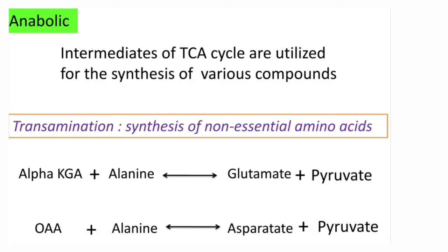Coming to the anabolic role of TCA cycle, the intermediates of the cycle are used for the synthesis of various compounds. For example, transamination helps in the synthesis of non-essential amino acids from intermediates of TCA cycle. Alpha-ketoglutaric acid, one of the intermediates, on transamination produces glutamic acid. Similarly, oxaloacetate on transamination produces aspartate. Alanine transaminase and aspartate transaminase convert alpha-ketoglutaric acid to glutamate and oxaloacetate to aspartate, so non-essential amino acids glutamate and aspartate can be synthesized from TCA cycle intermediates.